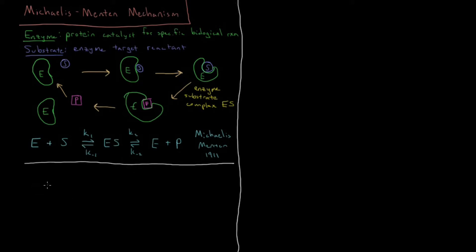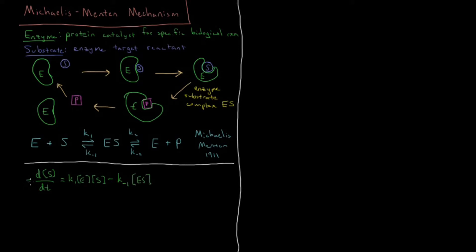We want to figure out the rate of this reaction and what factors control how fast it goes. Starting with the rate law for the substrate: minus dS/dt equals K1 times [E] times [S] — that's it getting consumed by K1 — minus K-1 times [ES], since it gets produced by K-1. Notice the signs are switched because of the minus sign out in front. Then we look at the concentration of the intermediate, the enzyme-substrate complex.